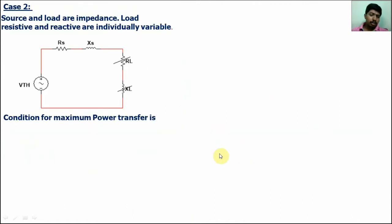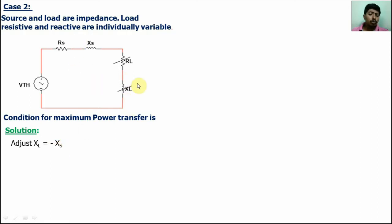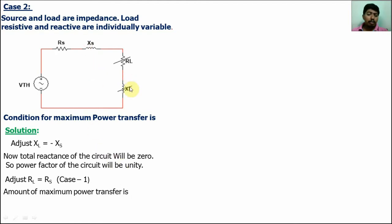Case 2: source and load are impedance, and the load resistance and reactance are individually variable. By the first condition, the power factor of the circuit should be unity. There is an inductive component present, so adjust XL to nullify the total reactance value. If XL equals minus XS, the total reactance becomes zero and the circuit becomes purely resistive. Next, by Case 1, adjust RL equal to RS, and the power will be maximum. The amount of maximum power transfer is P_max equals VTH squared divided by 4·RTH, since the reactive component value is zero.